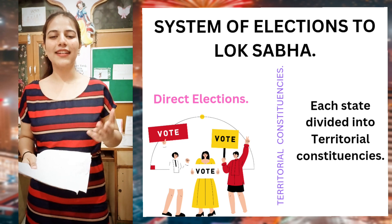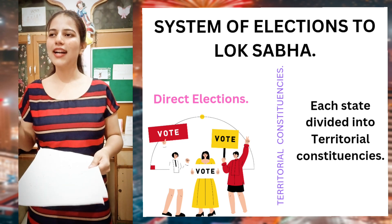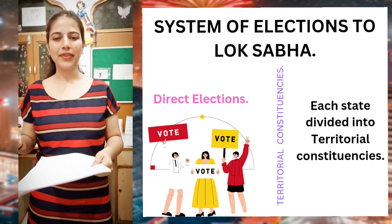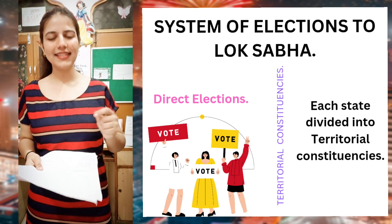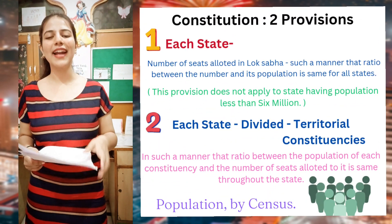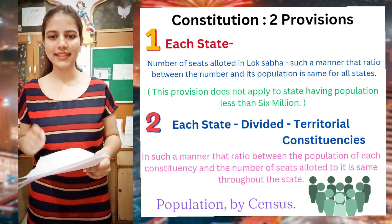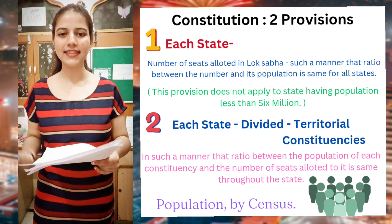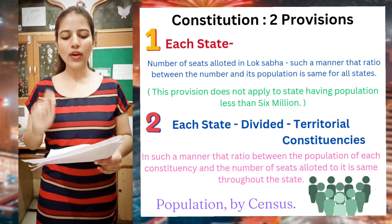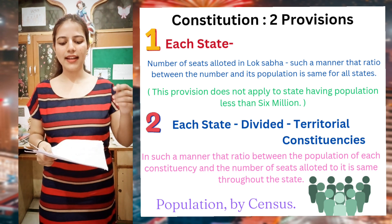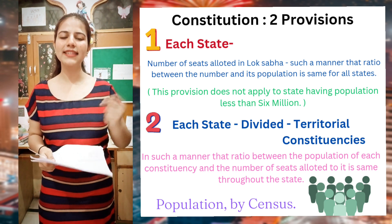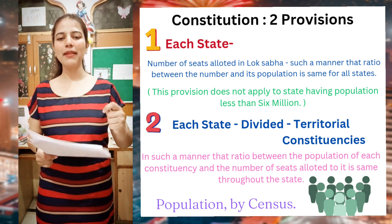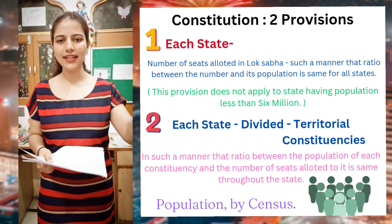When we conduct direct elections, every state divides a geographical arena into some territorial constituencies. Regarding these territorial constituencies, there are two provisions mentioned in our constitution. The first one is that the number of seats allotted to each state — their ratio between the number of seats and the population living there — should be the same and proportional throughout the nation.